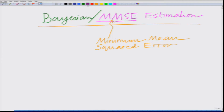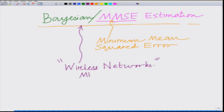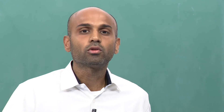We are going to look at both Bayesian estimation and MMSE estimation in the context of wireless networks — specifically, examples and applications involving MIMO (multiple input multiple output systems), OFDM (orthogonal frequency division multiplexing), and WSN (wireless sensor networks).